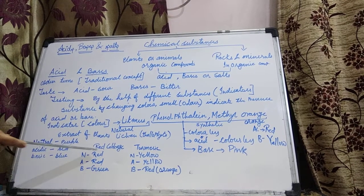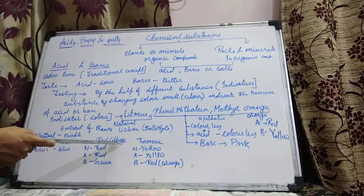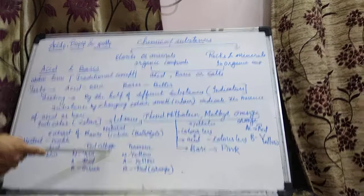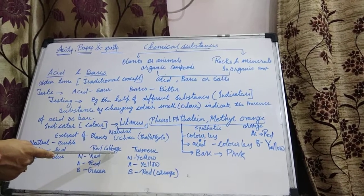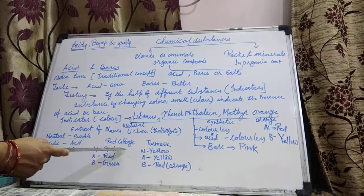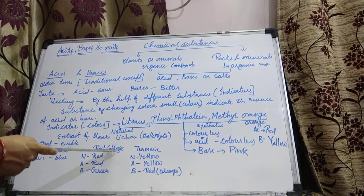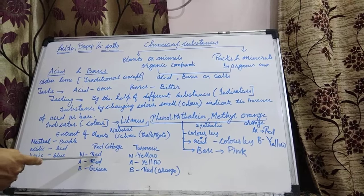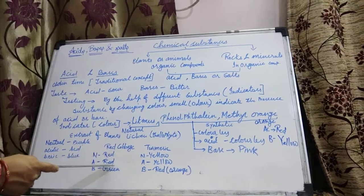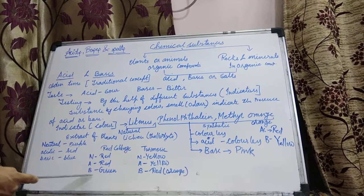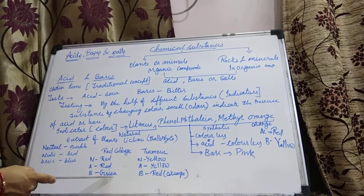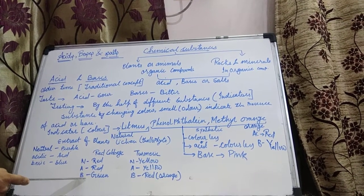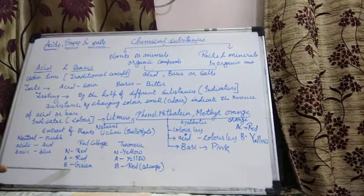One more natural indicator is red cabbage. Red cabbage acts as a natural indicator and also changes its color in different mediums. If we take out the extract of red cabbage, it is naturally red. In neutral medium, the color of red cabbage is red. In acidic medium, it is again red — it does not change its color with acid. But with base, its color becomes green. So red cabbage turns green when it comes into contact with a base, allowing us to identify whether a substance is acidic or basic.